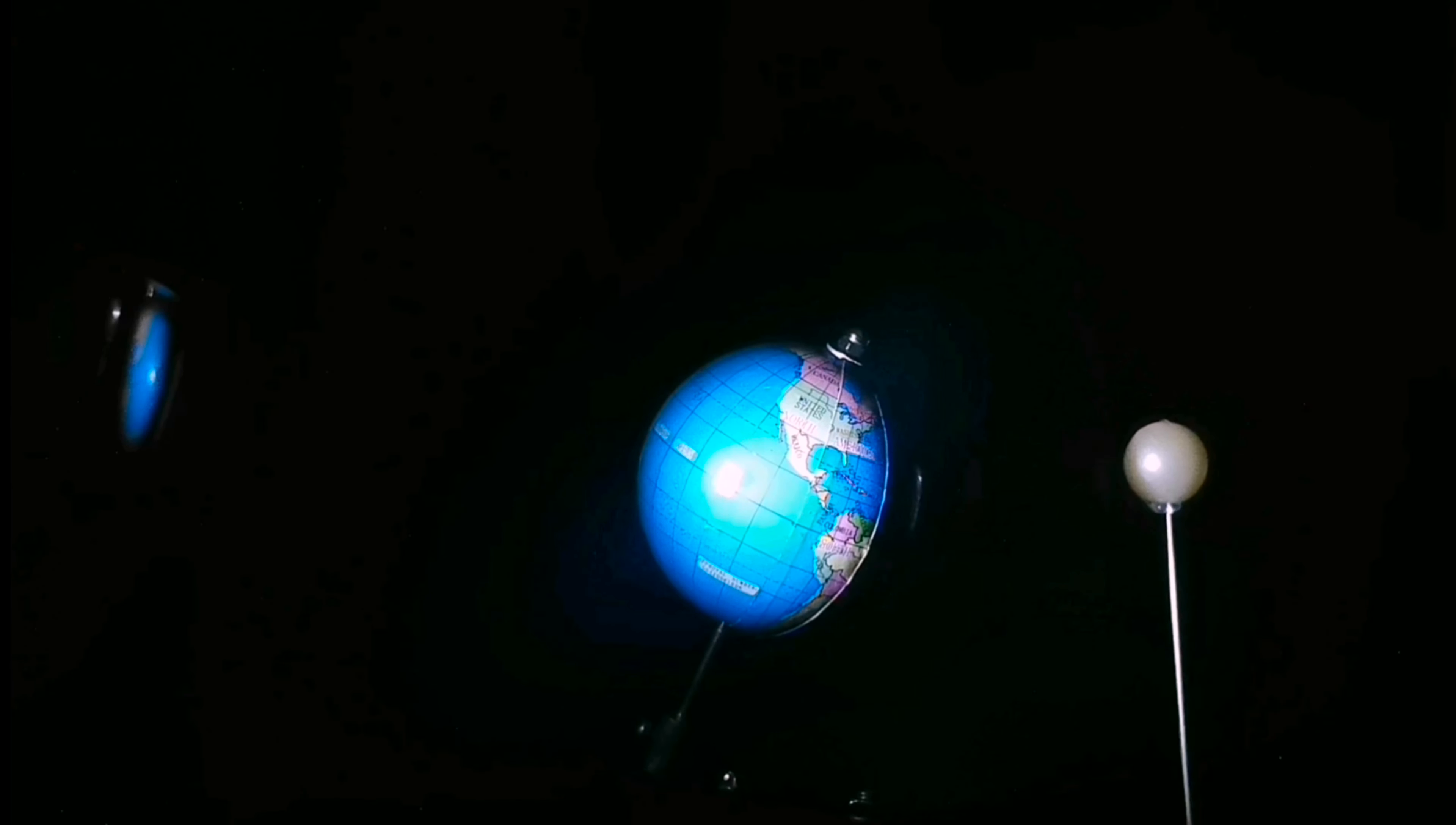This happens when the sun, the Earth, and the moon forms a direct alignment. You can observe here that the Earth forms a shadow over the moon when it blocks the light from the sun.